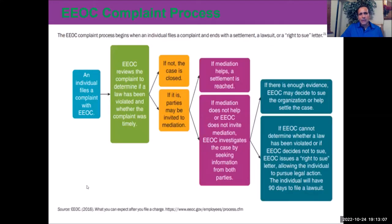The EEOC complaint process generally works as follows: an employee or individual files a complaint with the agency. The EEOC reviews it and makes a decision. After determining whether mediation is necessary or the case should go further, there will be a decision with regards to settlement, a lawsuit, or a right-to-sue letter. This process covers everything from A to Z for any kind of discrimination related to the protected categories.